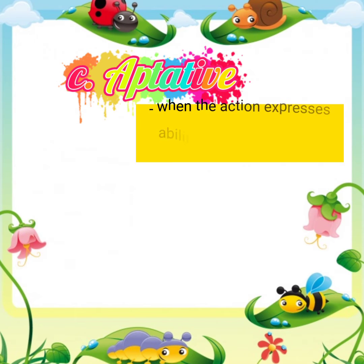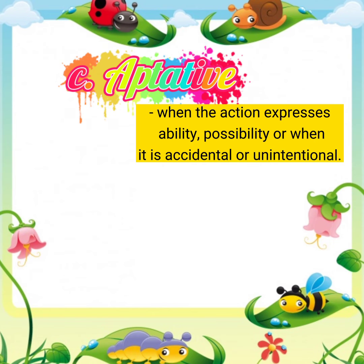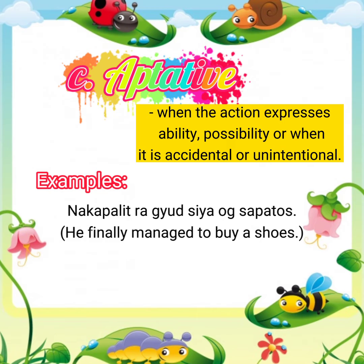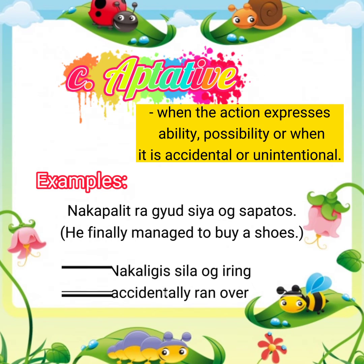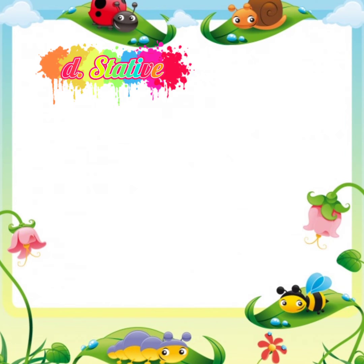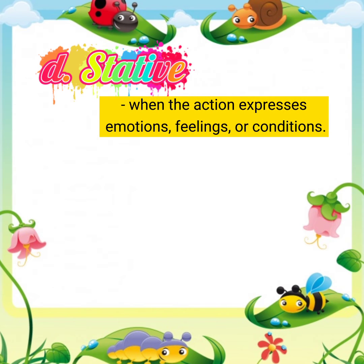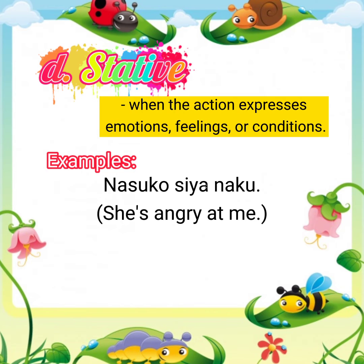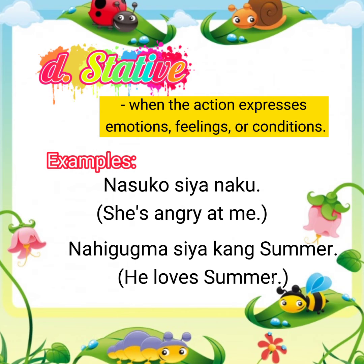Third is the aptative, when the action expresses ability, possibility, or when it is accidental or unintentional. For example: nakapalit ragayod siya og sapatos — he finally managed to buy shoes. Second example: nakaligis sila og iring — they accidentally ran over a cat. Fourth is the stative, when the action expresses emotions, feelings, or conditions. For example: nasuku siya naku — she's angry at me. Second example: nahigugma siya kang summer — he loves summer.